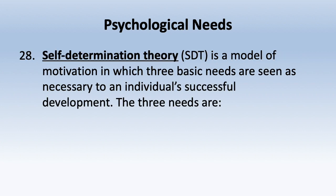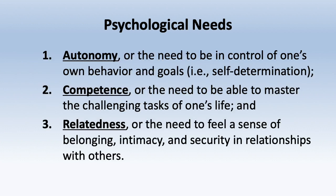Another model is self-determination theory — a model of motivation in which three basic needs are seen as necessary to an individual's successful development: autonomy, competence, and relatedness. You can connect these to Maslow's higher levels such as self-actualization and esteem. Autonomy is the need to be in control of one's own behavior and goals — self-determination.